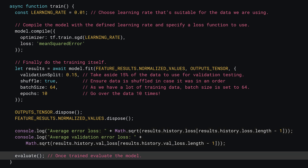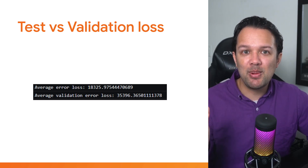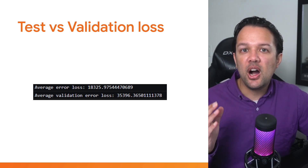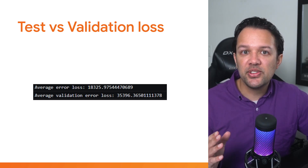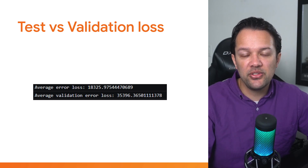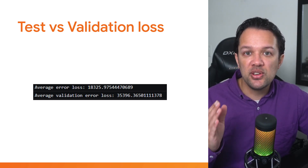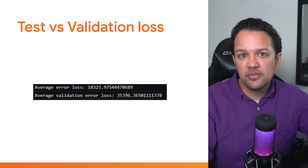Finally, you can call an evaluate function to try out your newly trained model, which you'll define in the next section. If you run the program at this point, after a few seconds you'll see something similar to what's shown printed in the console. However, as the weights and biases are chosen randomly at the start, your exact numbers may differ. Here, you can see the test loss is about $18,300, which is really rather good.